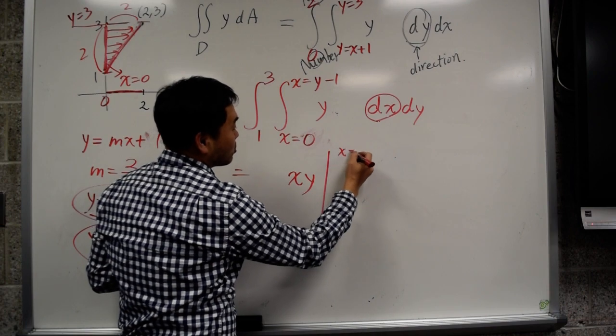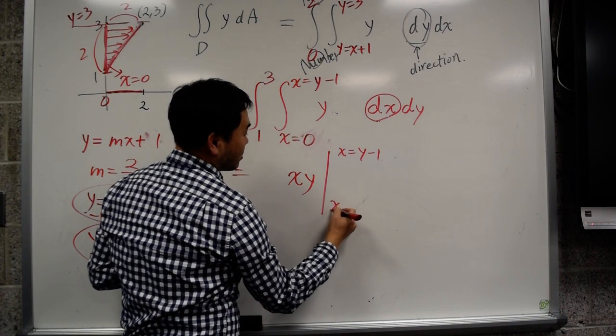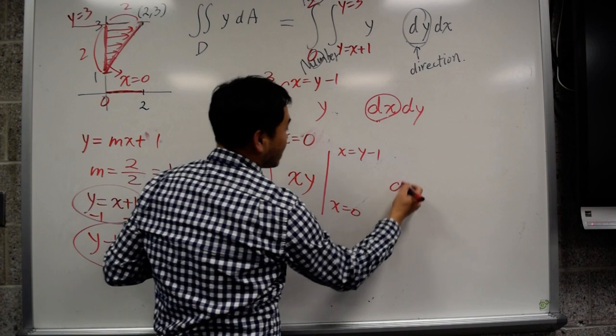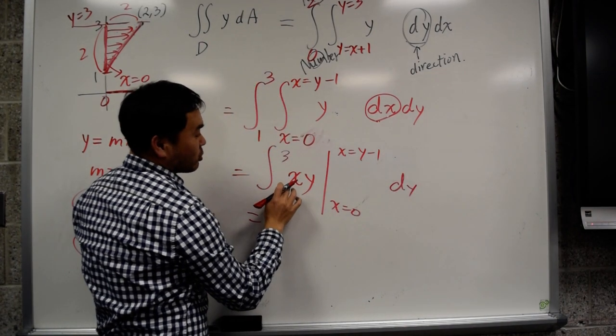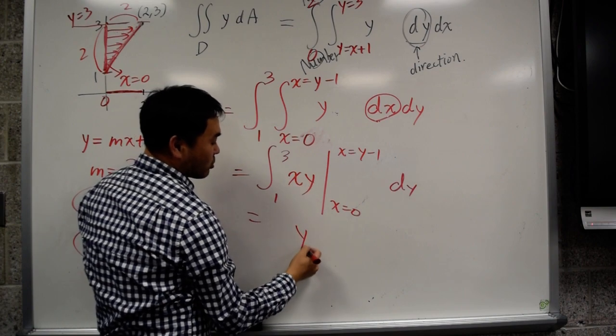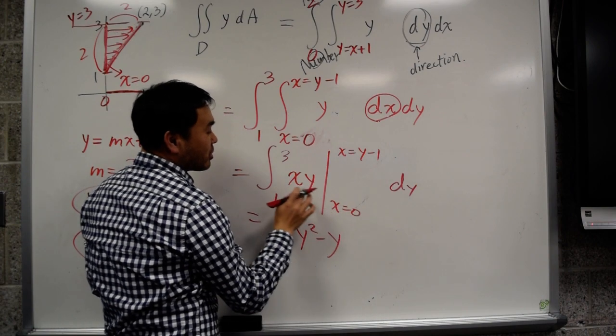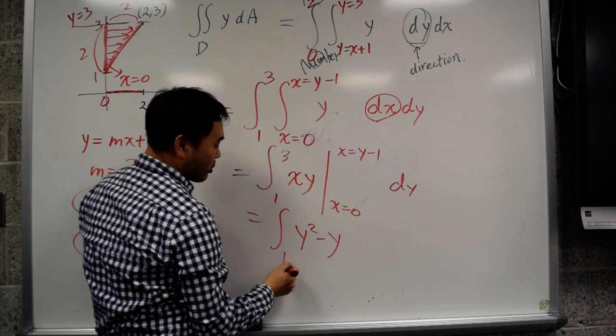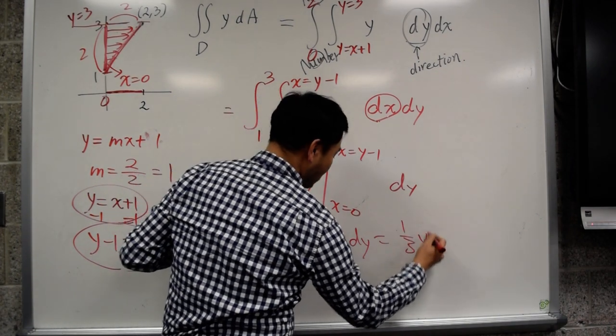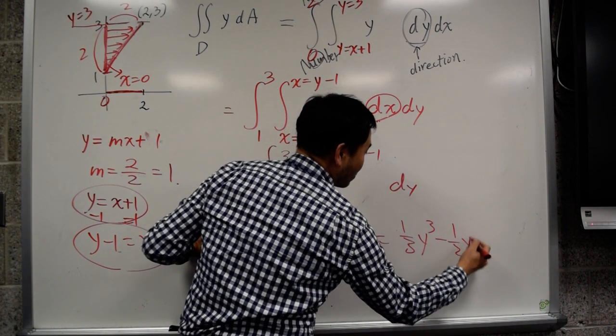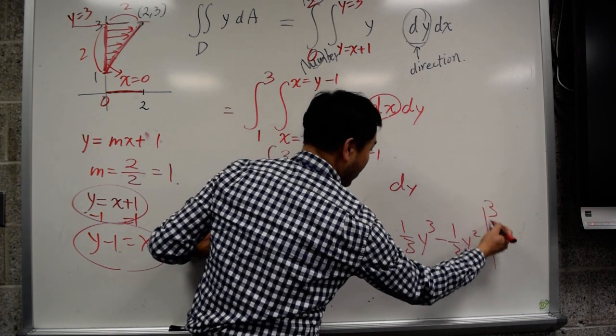And you're plugging in x equal to y minus 1 and x equal to 0, and 1 to 3. So when you plug this in, y minus 1 times y, that's y squared minus y. When you plug in 0, that's nothing, so you're integrating 1 to 3 of y squared minus y dy, which is 1 third y cubed minus 1 half y squared. You plug in 3 and 1.